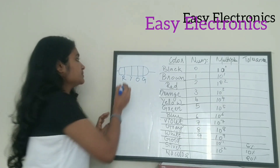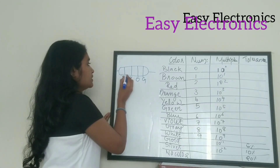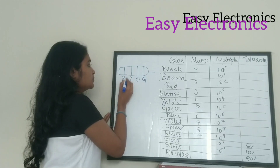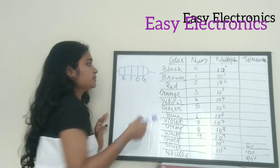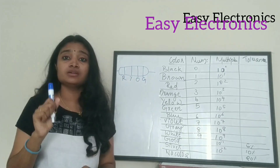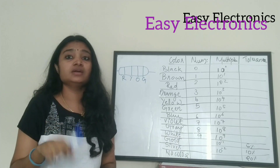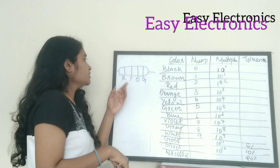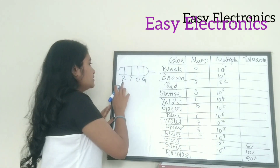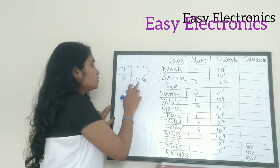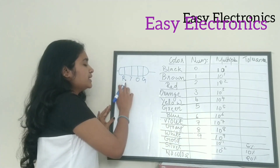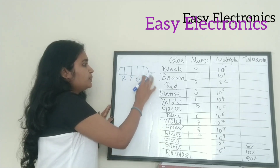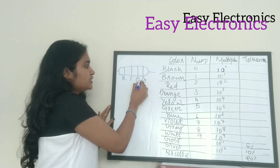Now let's find the resistance value. I will use a resistor with red, yellow, orange, and gold color bands.